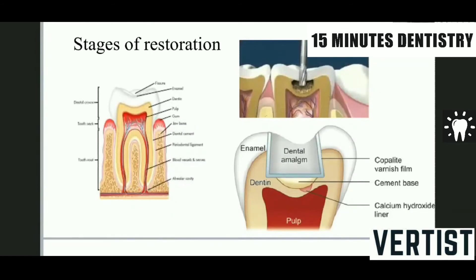While doing all this, we need to keep in mind the health of the tooth, the physiology, the form, the function, and the contour and occlusion of the patient. So we have to be very choosy while selecting the material which is going to restore the missing part of the tooth.